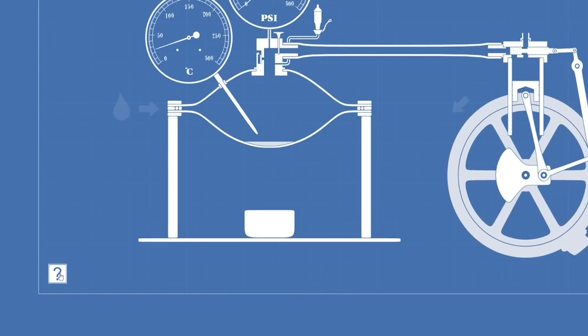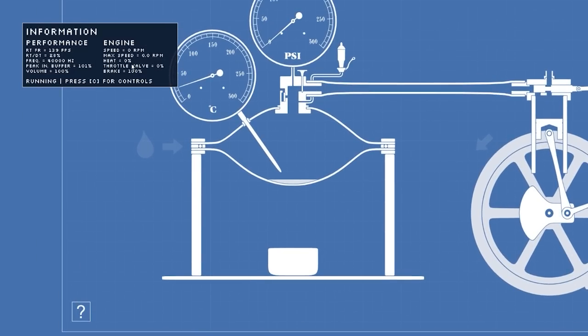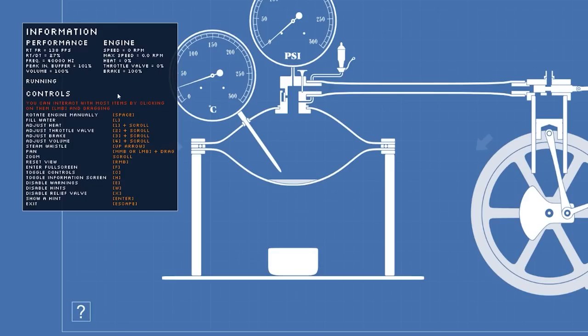You can also access the help on the question mark thing to show you different stats like the speed and max speed, heat, etc. And press C to access all of the controls.